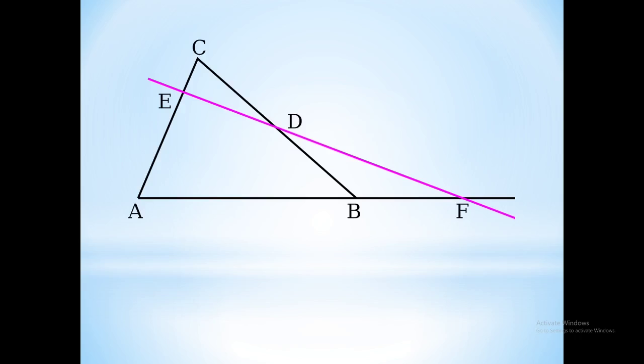Menelaus' theorem states that if we have a triangle ABC and we bisect that triangle with a line that passes through three points E, D, and F, the theorem claims that the length of line FA over the length of line FB times the length of line DB over the length of line DC times the length of line EC over the length of line EA equals 1.